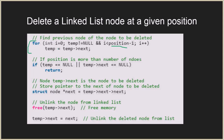Inside the for loop, we move the temp pointer to the next of temp in each iteration, moving from one node to the next until we reach the node previous to the one to be deleted. If position is more than the number of nodes — for example, the list has four nodes but we are asked to delete the tenth — this condition catches that case and we just return.